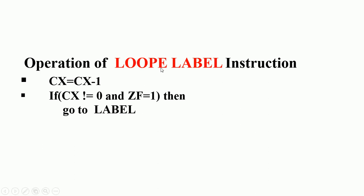Now the operation of loop equal: when you execute loop equal, first it decrements CX by 1. Second, if CX is not equal to 0 AND the zero flag is set — if both are true — then control goes to the specified label. Otherwise you execute the next immediate instruction and come out of the loop. Now I am going to give a demo for this.